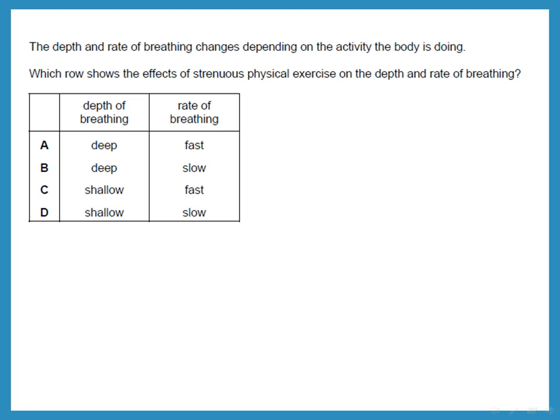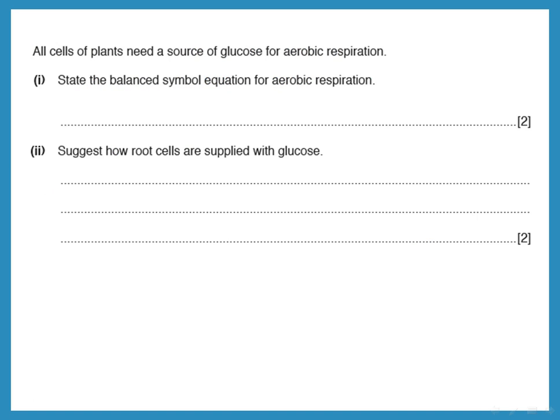During strenuous physical exercise, breathing becomes deeper and faster. All cells need glucose for aerobic respiration. The balanced symbol equation for aerobic respiration is: C₆H₁₂O₆ + O₂ → CO₂ + H₂O (balanced accordingly). The formula for glucose is C₆H₁₂O₆.